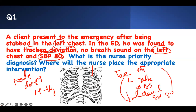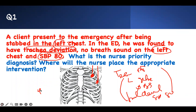Alternatively, count to the fourth intercostal space — one, two, three, four. The anterior axillary line is here. So: second intercostal space at the mid-clavicular line, or fourth intercostal space at the mid-axillary line. Those are where you place your needle decompression.